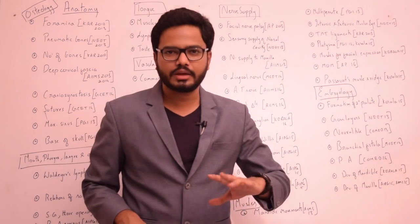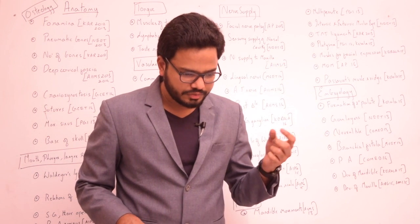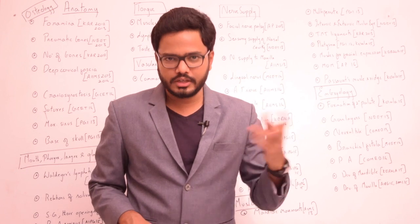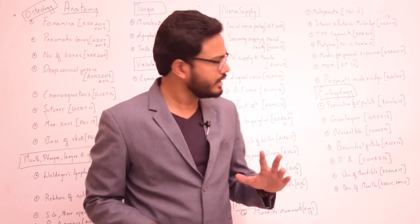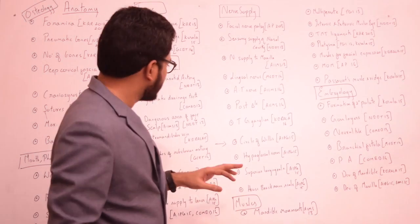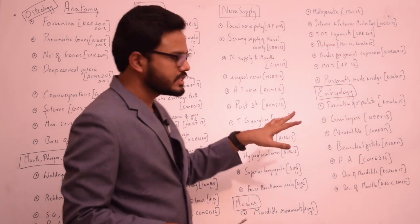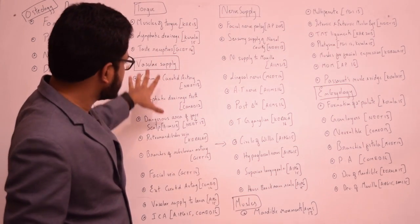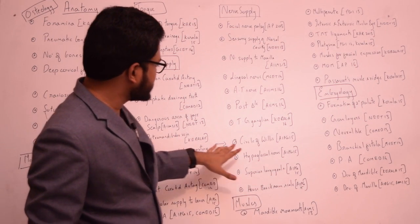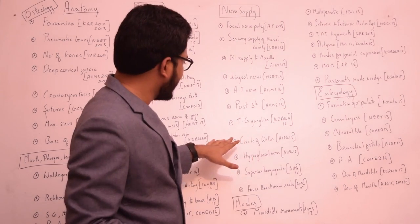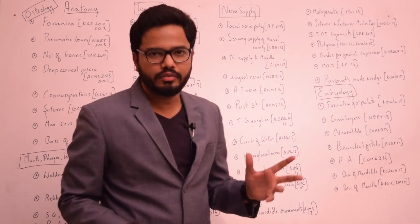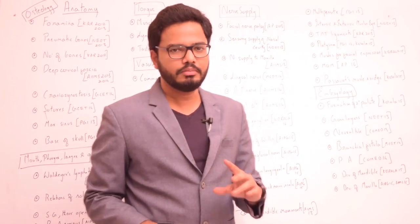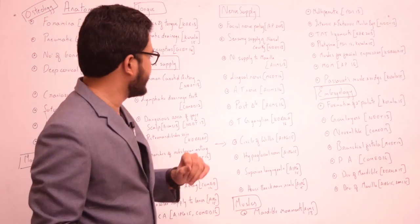The House-Brackmann scale is basically used for evaluating neuronal damage in case of facial palsies. And also we have questions from the circle of Willis — this is the vascular supply of the brain. You can anticipate questions from this topic as well. These are some of the topics which we can anticipate from the nerve supply of head and neck.